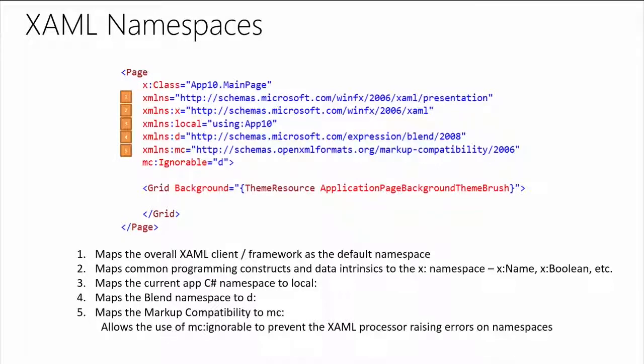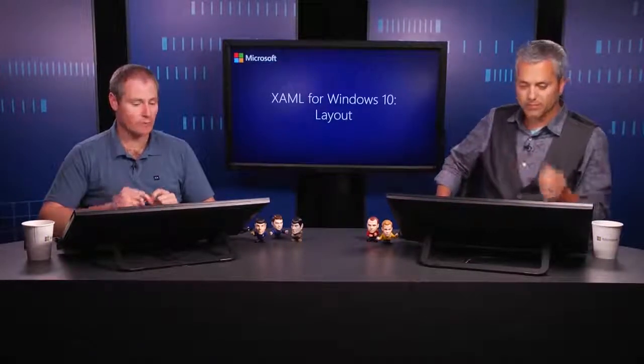Beyond the default, you might need other things. The X namespace is used very frequently — it defines your main programming constructs and gives access to data intrinsics, which are common .NET or WinRT data types such as Boolean and string. We commonly see it used for things like X:Name. You could almost look at X as part two of the WinFX namespace, complementing and completing the entire picture.